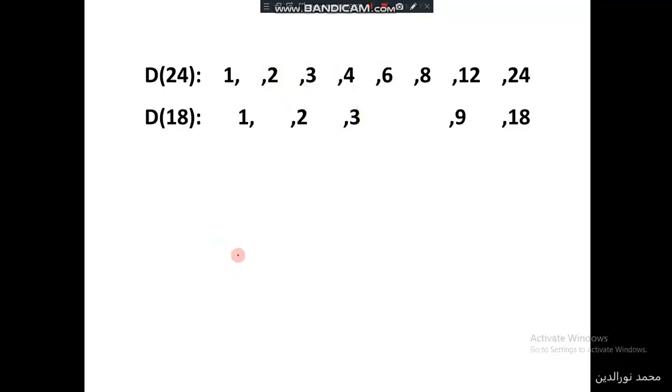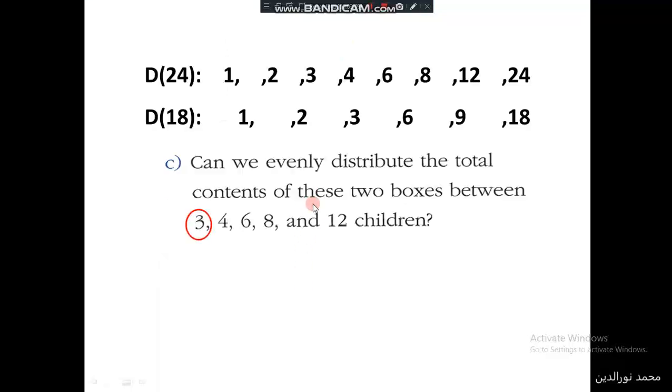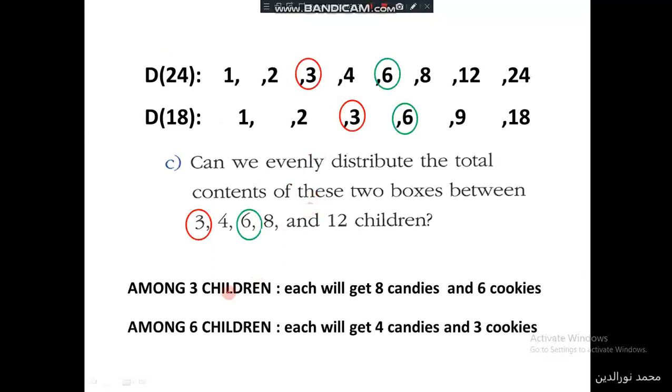To find the share of each child: among 3 children, each gets 8 candies, because 8 times 3 is 24, and 6 cookies, because 6 times 3 is 18. Among 6 children, each gets 4 candies, since 4 times 6 is 24, and 3 cookies, since 3 times 6 is 18. This way we distribute them evenly.